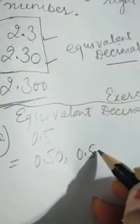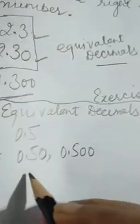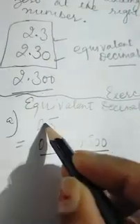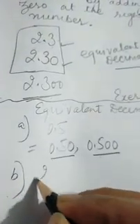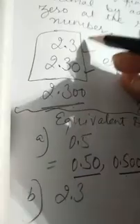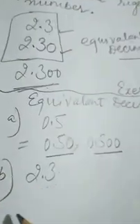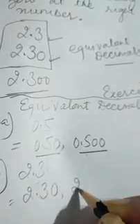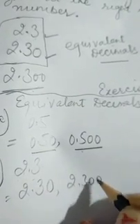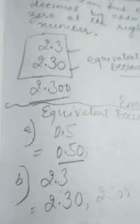One more we can write: 0.500. These are the equivalent decimals — their values are the same. Then part b is 2.3. As we already did this in the example, the equivalent decimal will be 2.30, or 2.300.